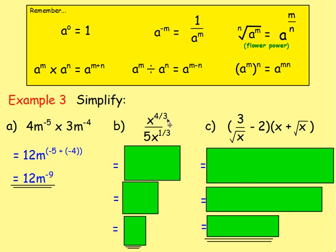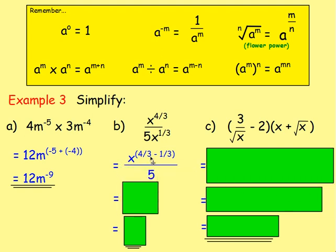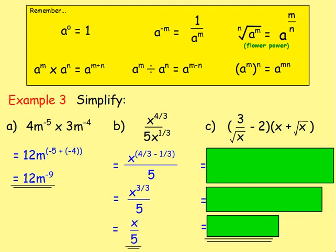Next: x to the power of 4 thirds divided by 5x to the power of 1 third. Leave the 5 where it is, and focus on x to the power of 4 thirds divided by x to the power of 1 third — when dividing you subtract indices, so it's x to the power of 4 thirds minus 1 third. The denominators are the same, so just subtract the numerators: x to the power of 3 thirds, over 5. And 3 thirds makes 1 whole, so it's just x over 5, or x to the power of 1 over 5.